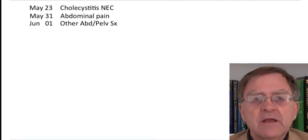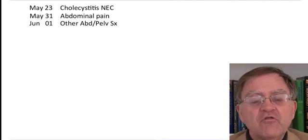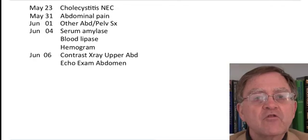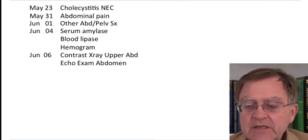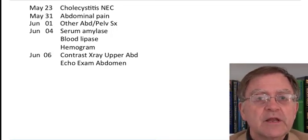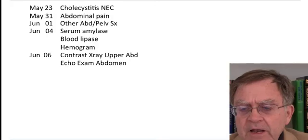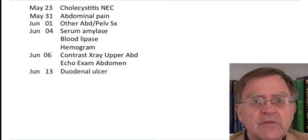Eight days later, the diagnosis switches to simply abdominal pain, and in June she has a diagnosis of other abdominal and pelvic symptoms. Later in June, the doctor begins diagnostic testing — a serum amylase and blood lipase, testing for the possibility of pancreatitis, and also a hemogram, a complete blood count to assess whether there has been blood loss. A couple of days later in June, she has a contrast x-ray of the upper abdomen and an echo exam of the abdomen.